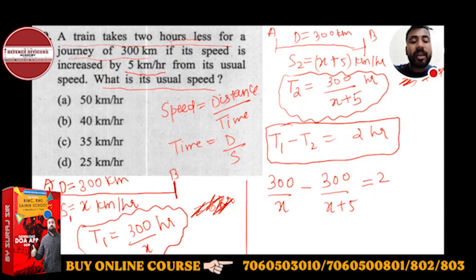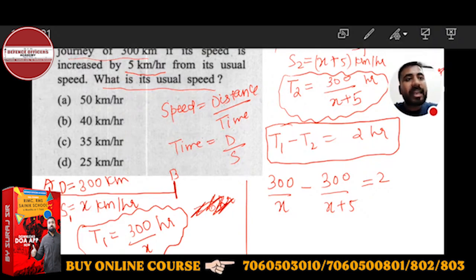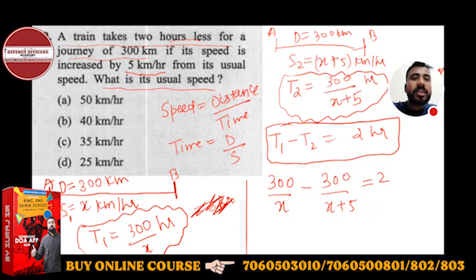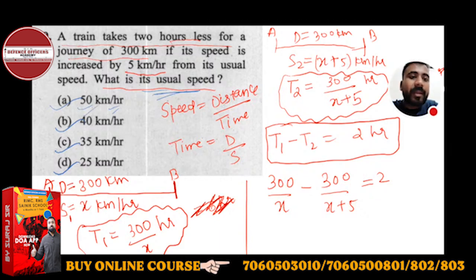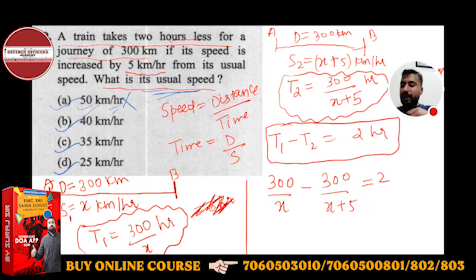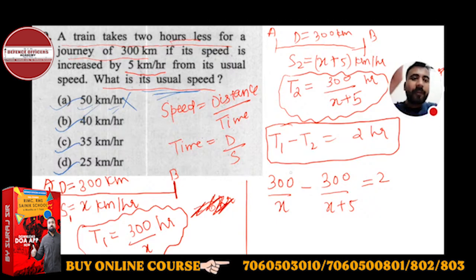For RMS students there are no options, but for CDS, NDA, AFCAT, CAPF, Sainik School, and Kendriya Vidyalaya students, there are 4 options given. Use those options — put each value of x one by one. We assumed x as the usual speed, so put the option values into the equation and check which value satisfies the condition: left-hand side should equal 2. If you put x equals 50, then 300 upon 50 is 6, and 300 upon 55 is not 4, so x equals 50 is wrong.